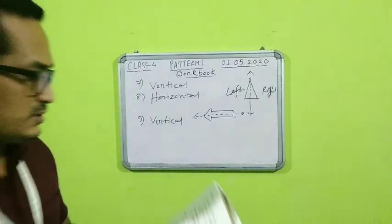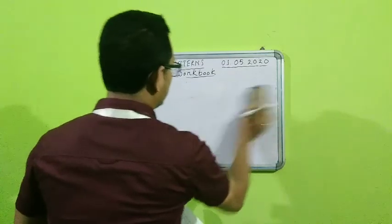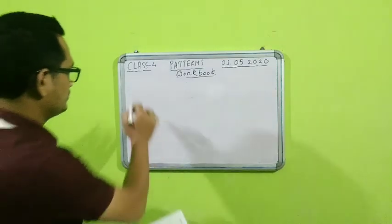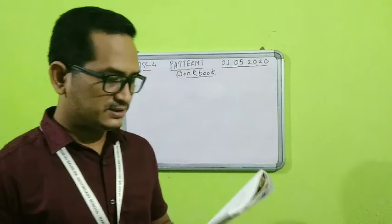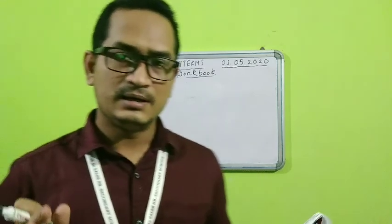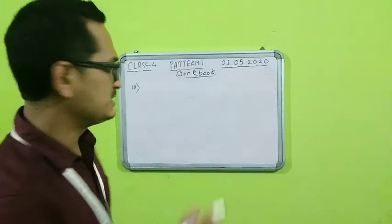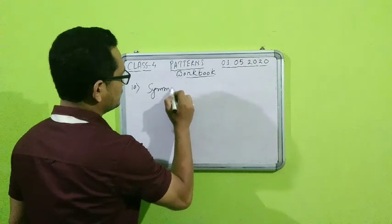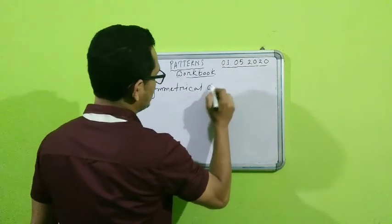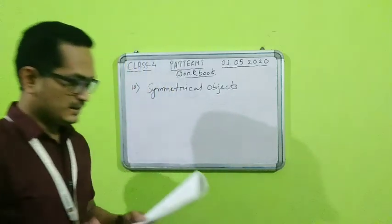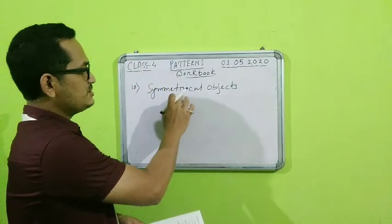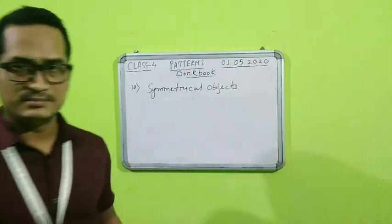Number 10: very short answer question — what are such objects called if each half of them has the same shape and size as the other? When one figure has two identical halves which are the same, those figures are called symmetrical objects. The answer is symmetrical objects — S-Y-M-M-E-T-R-I-C-A-L.